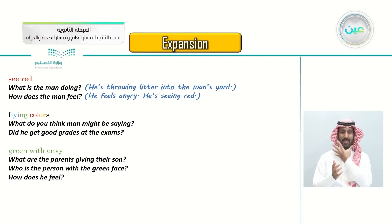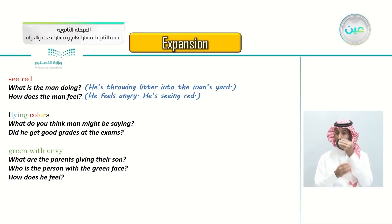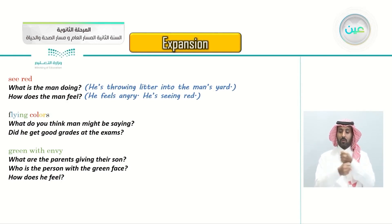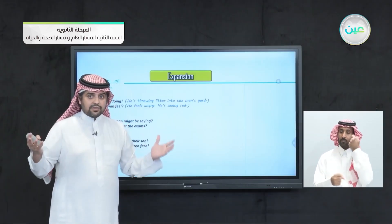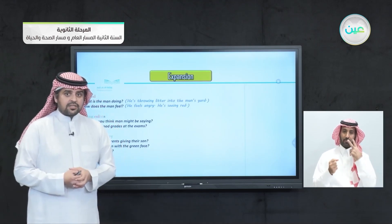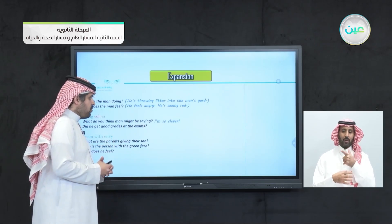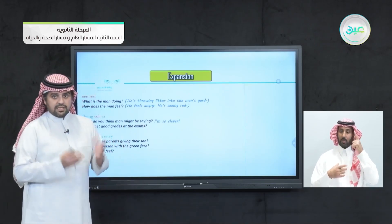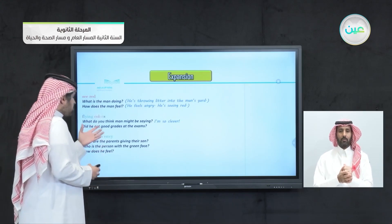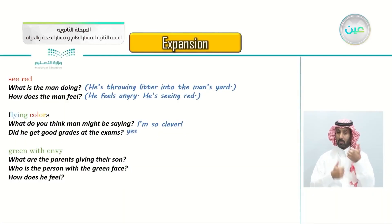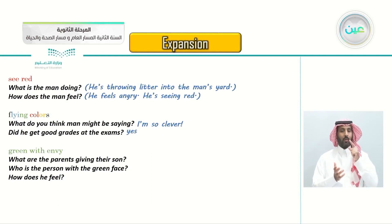Flying colors - here the man is standing next to flags. What do you think the man might be saying? He is standing proud. Maybe he is saying 'I am so clever' because he is proud of himself. Did he get good grades at the exam? Yes, of course he did.